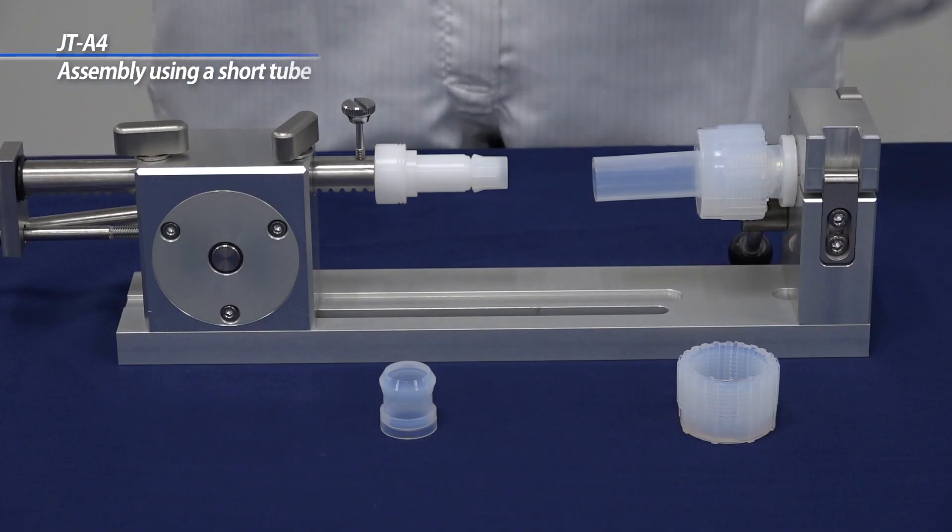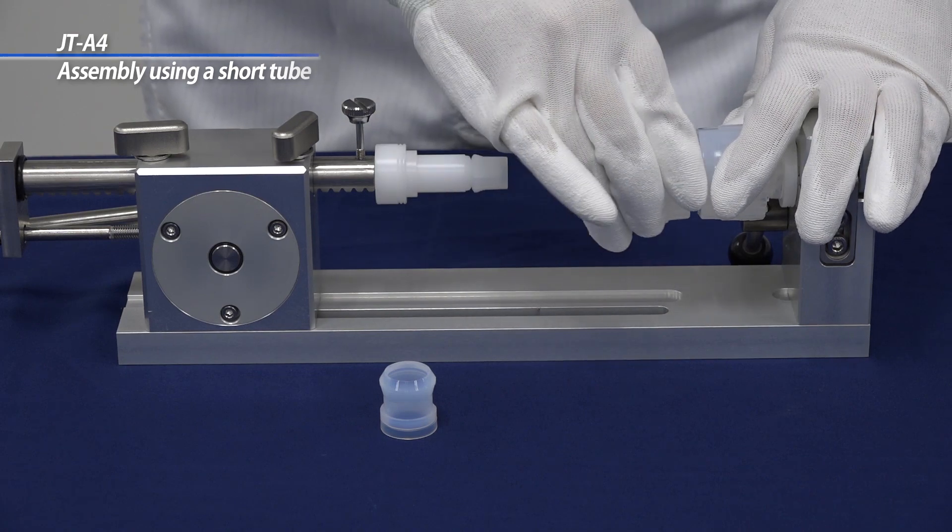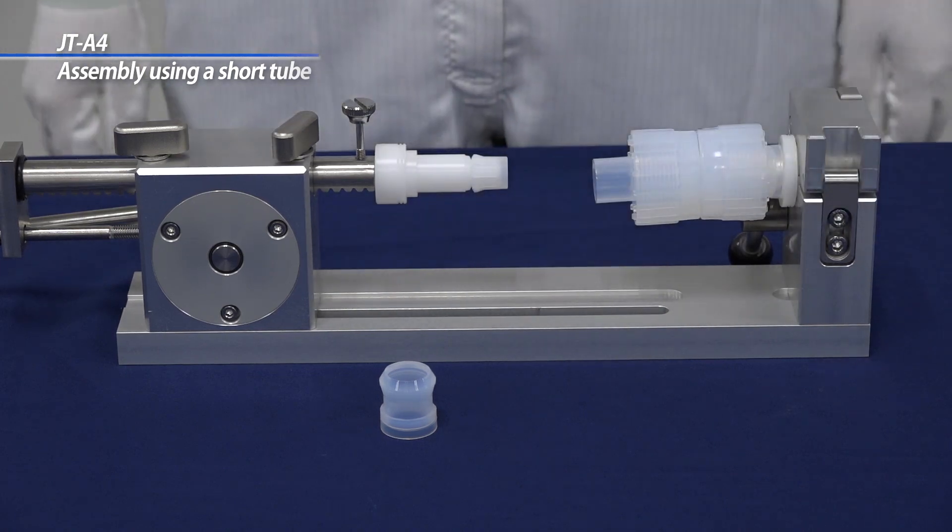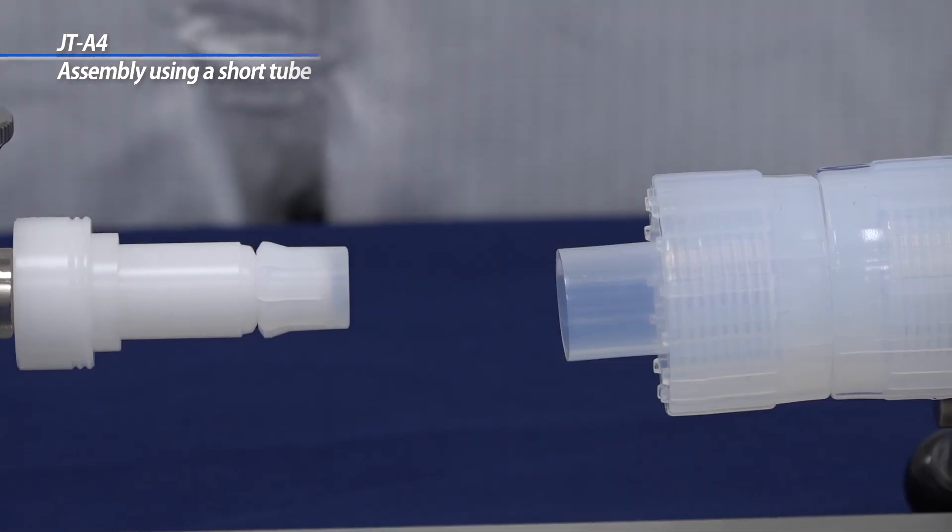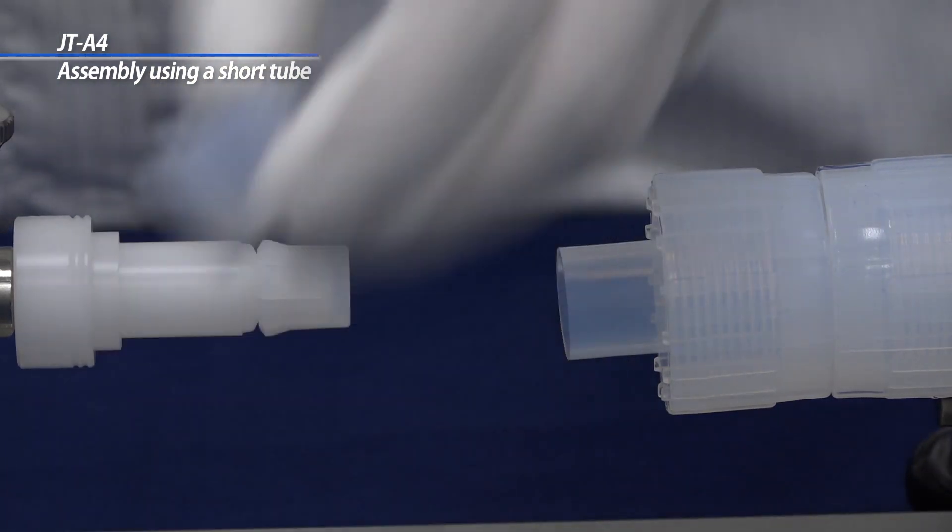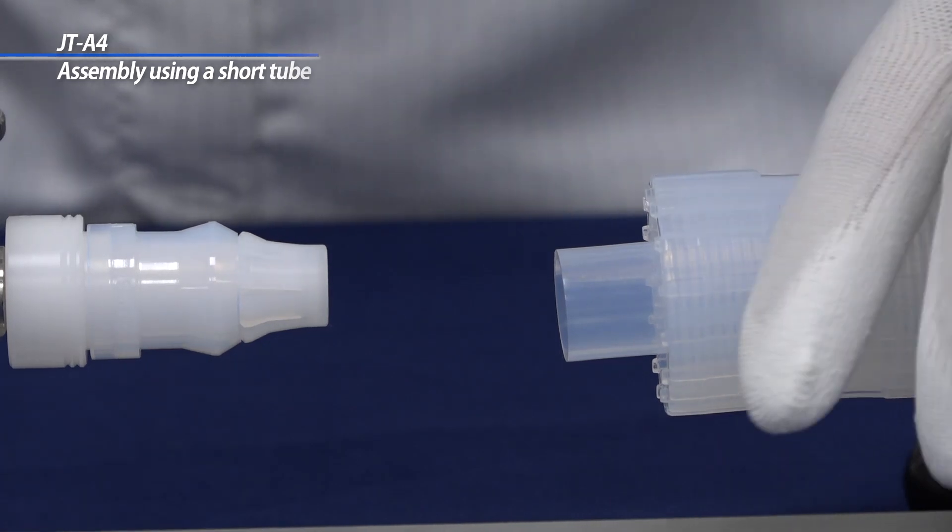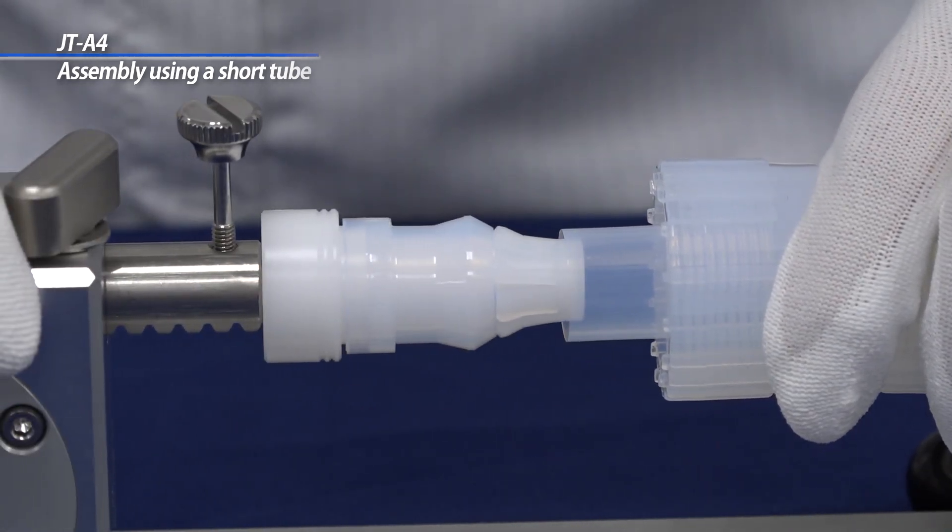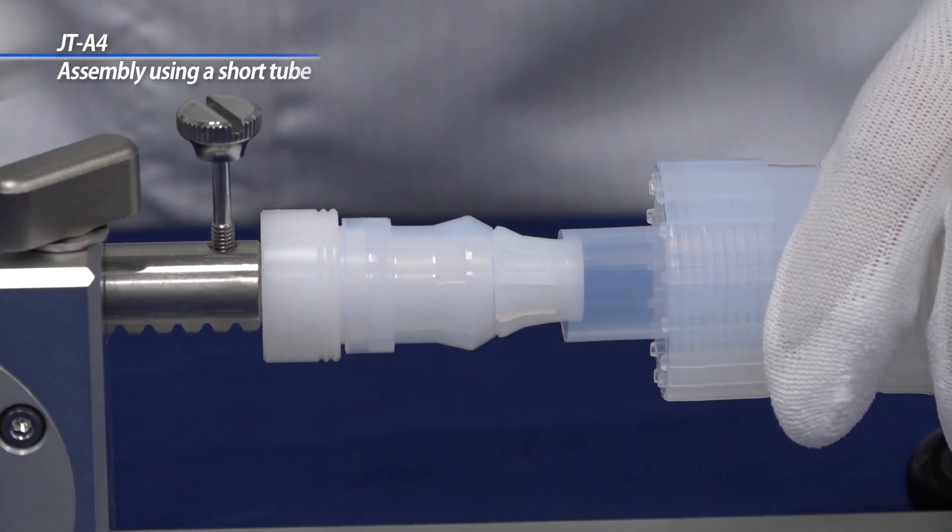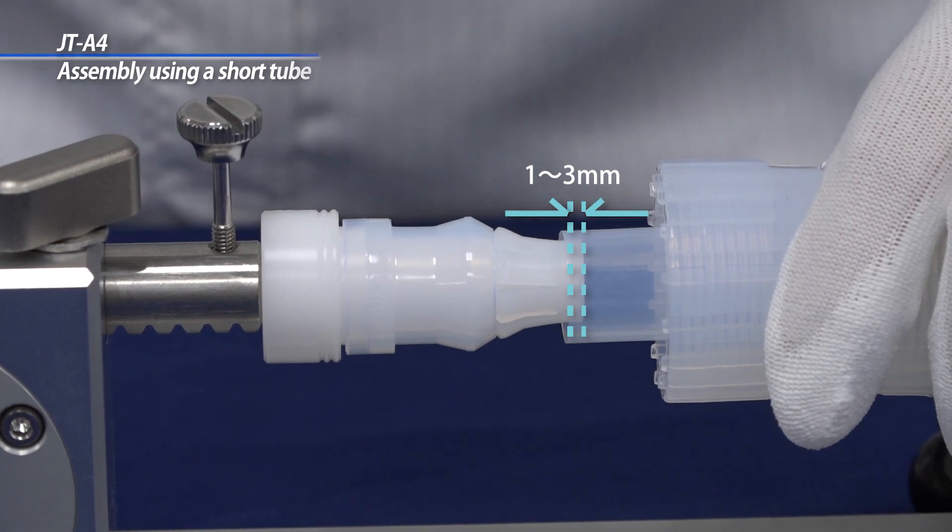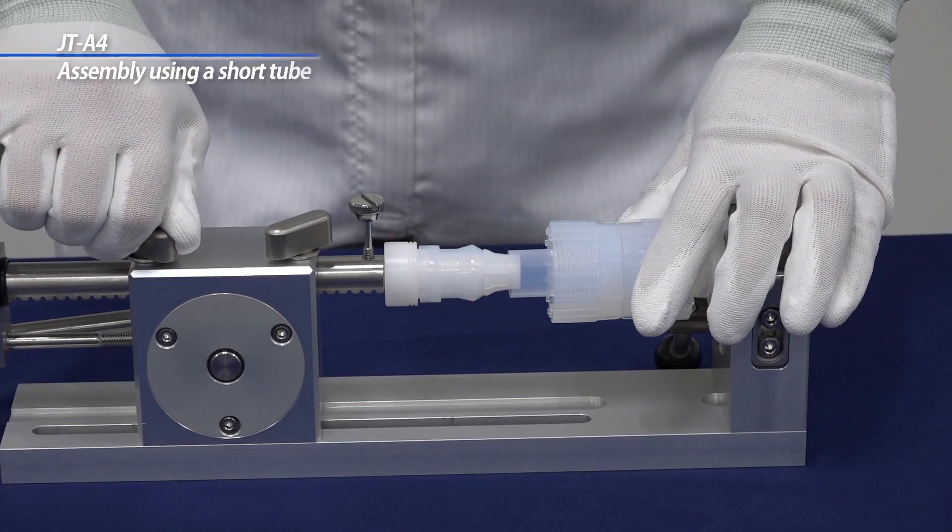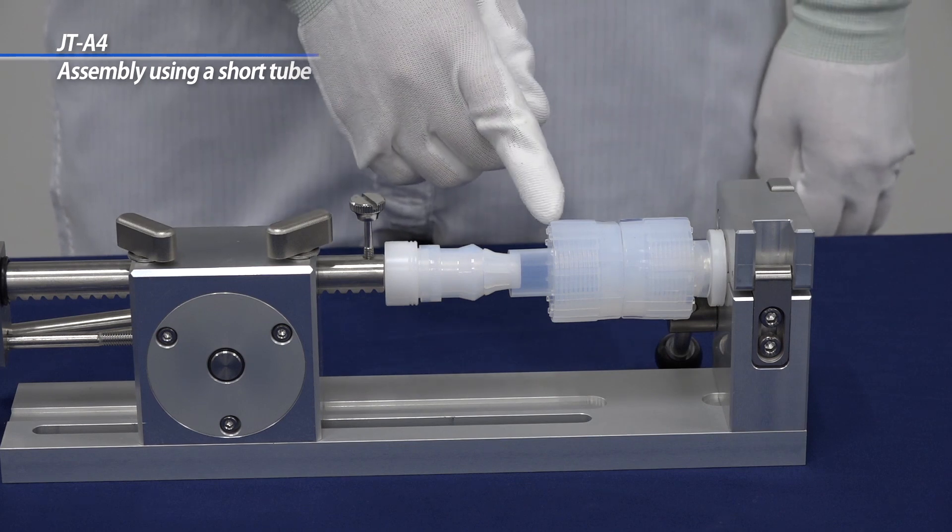Position the sleeve on the sleeve holder and secure the sleeve with a diameter expansion ring as above. Loosen the set screw and slide the insertion tool body until the leading edge of the diameter expansion ring is 1-3 mm inside the tube, and then tighten the set screws. Make sure the union nut is on the tube.